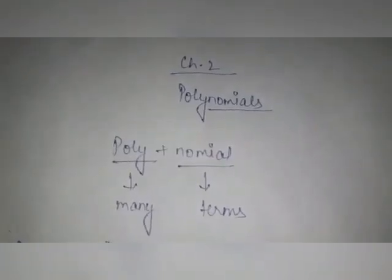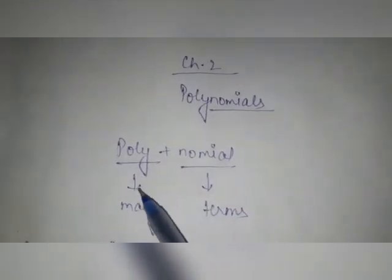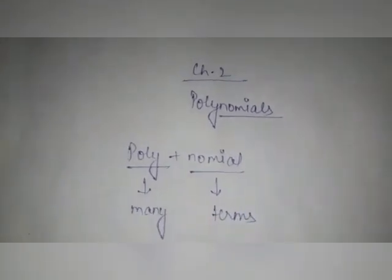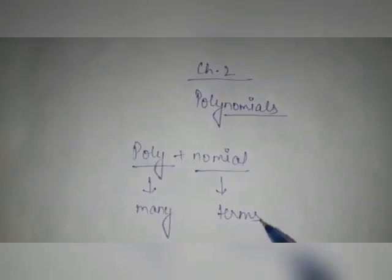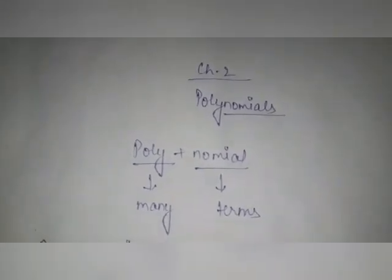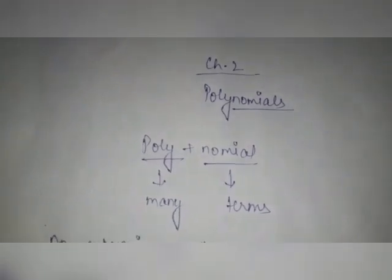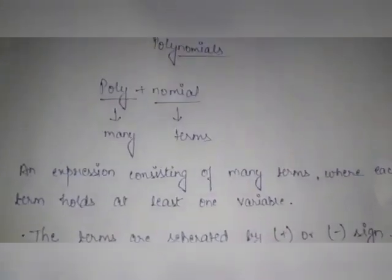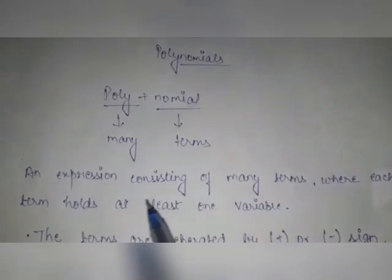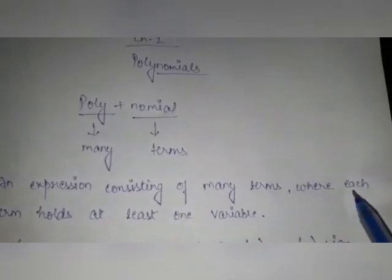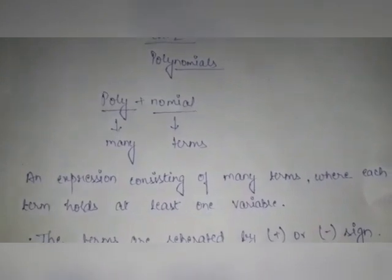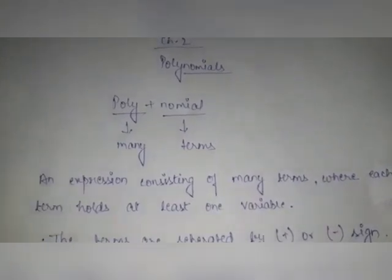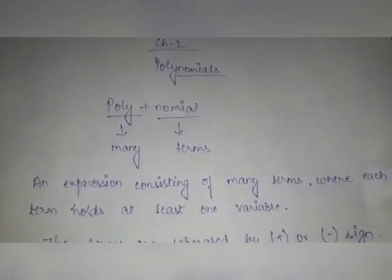Polynomials, as the name suggests, is made up of two words: poly and nominal. Poly means many and nominal means terms. So an expression that consists of many terms can be known as a polynomial. The definition: an expression consisting of many terms where each term holds at least one variable.